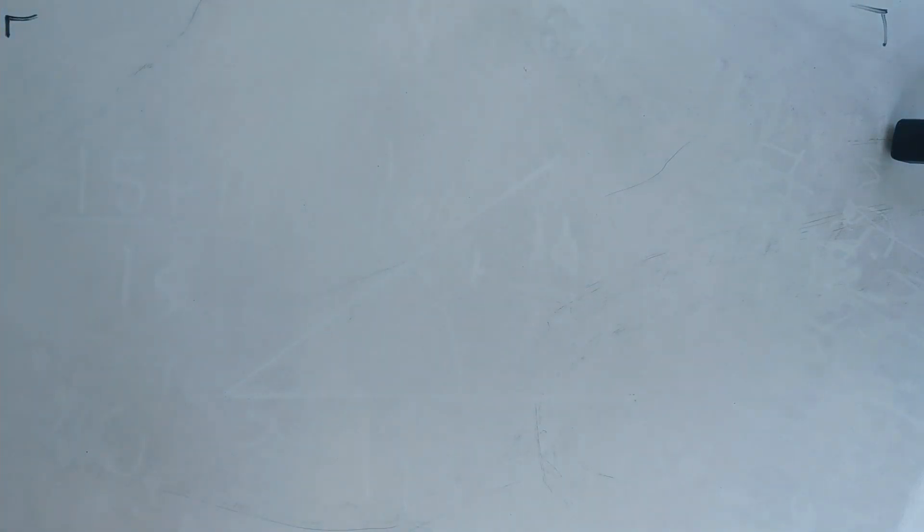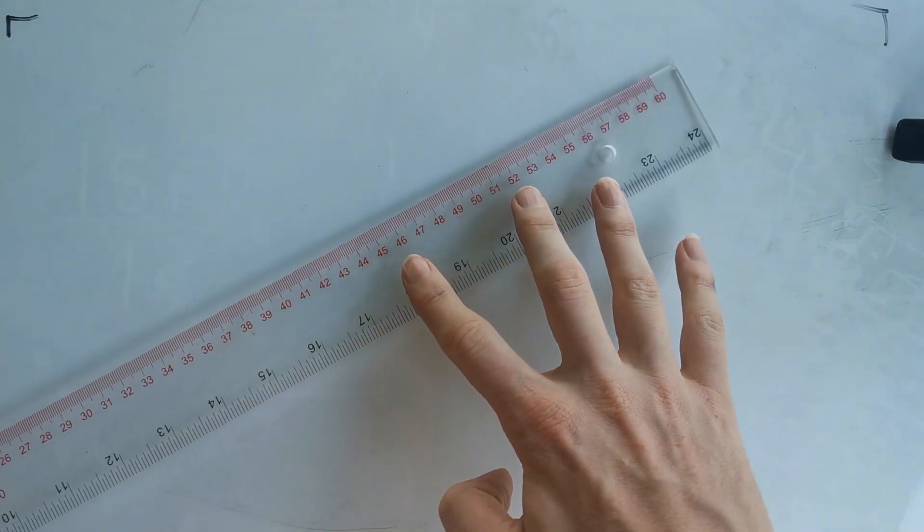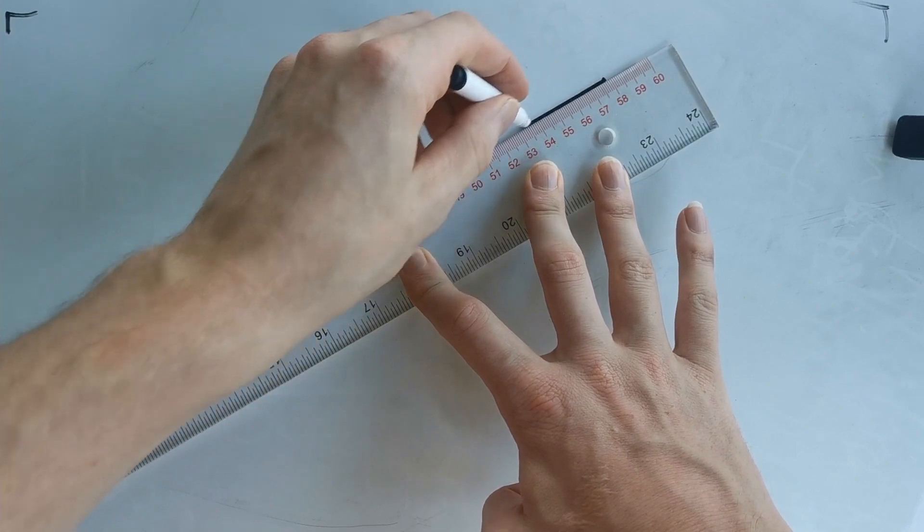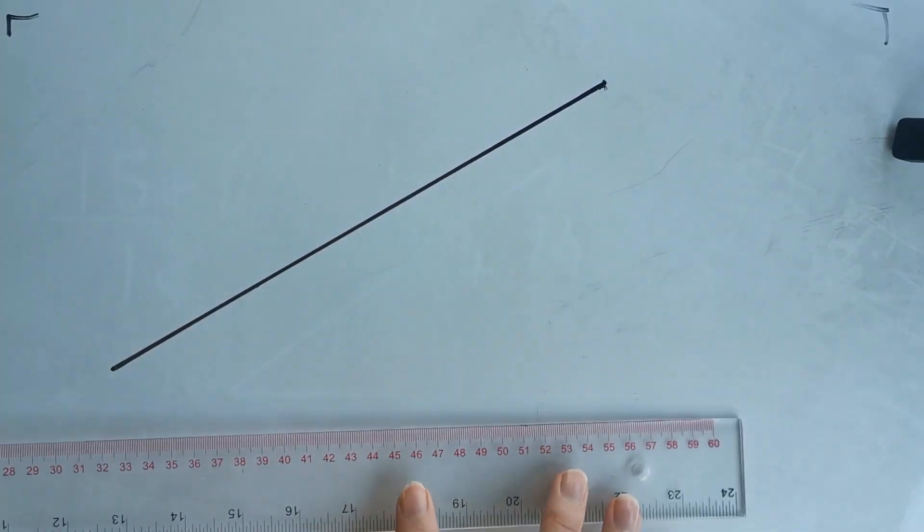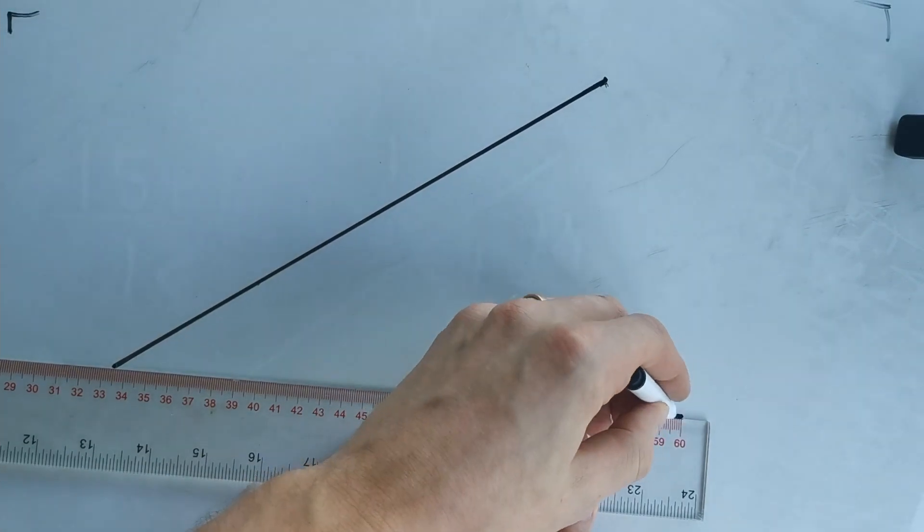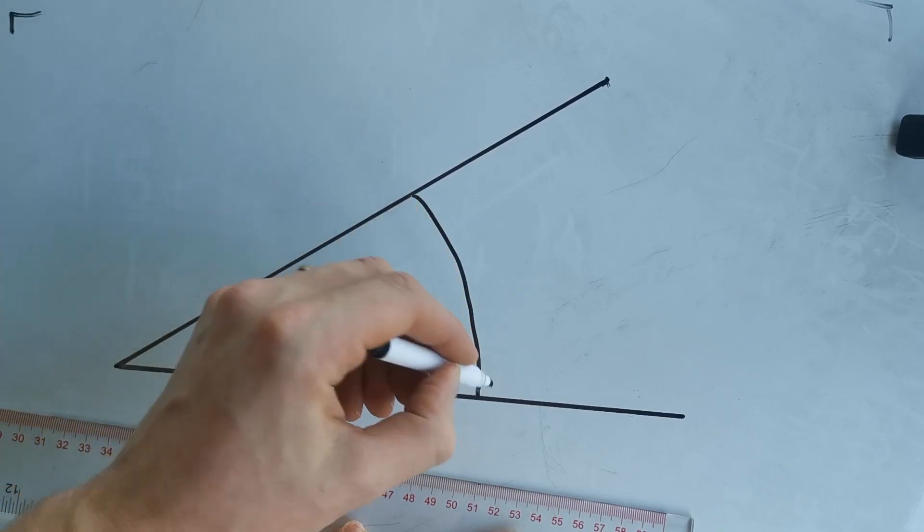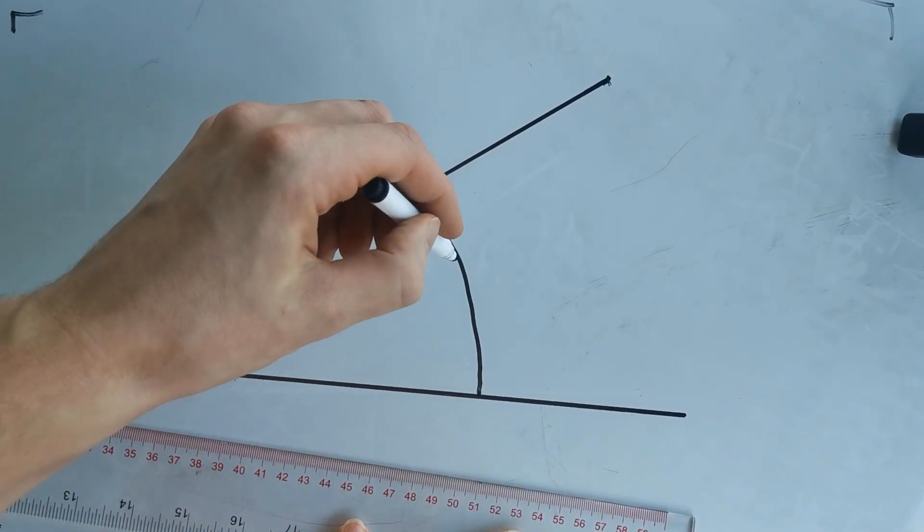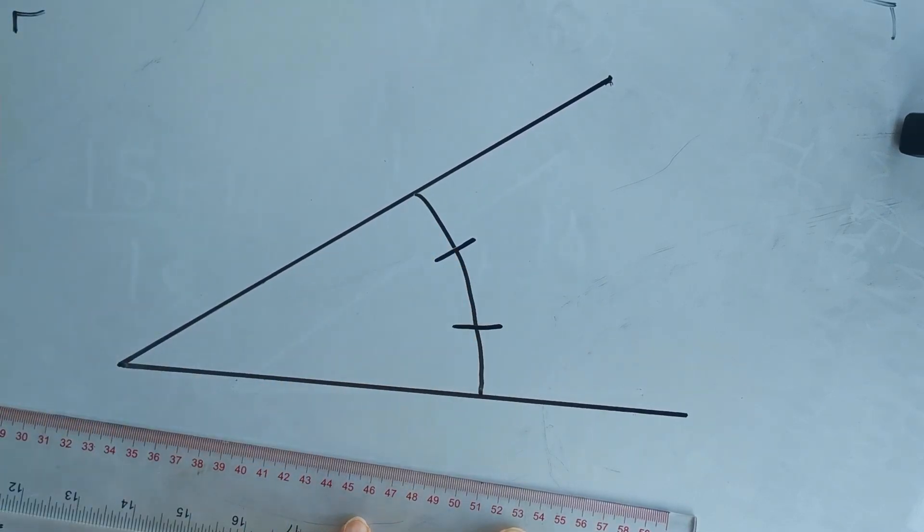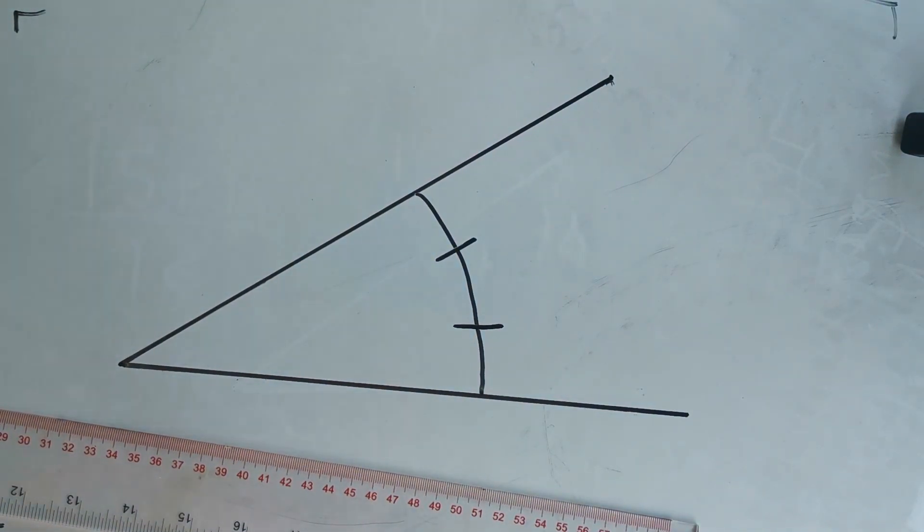All right everybody, welcome to the video. We are going to look at how to approximately solve a classic problem from geometry. The problem is how to trisect any given angle. If you search angle trisection on YouTube you will find a lot of videos that claim to be able to perfectly cut an angle into three parts. I will not be showing you how to do it perfectly because it is impossible. I'm going to show you a cool way to approximately do it using only a compass and straight edge.